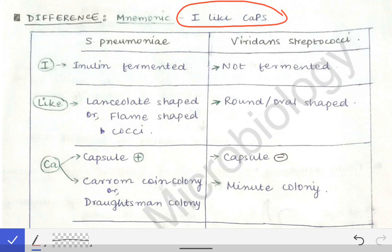Breaking down the mnemonic: 'I' stands for inulin fermentation. Streptococcus pneumoniae ferments inulin, but this is not done by Viridans streptococci.